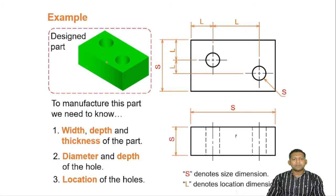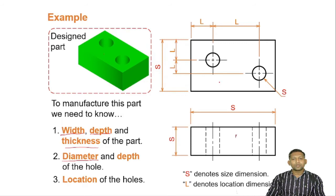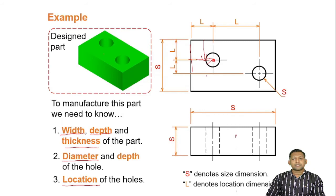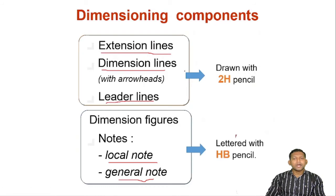What we are supposed to give is width, depth, and thickness — length, breadth, thickness — and then whatever general dimensions apply. We also need to specify the diameter of a particular hole. Through-hole diameter is defined. We need to specify until what depth the hole goes, and we should also tell where the location of that particular hole is, so we can get the center point of the circle.